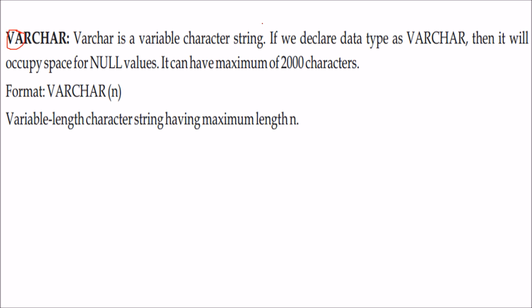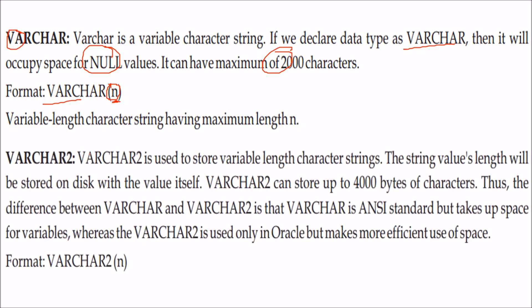Varchar2 is very specific to Oracle. It is used to store variable-length character strings, and the string value's length is stored on disk along with the value itself. Varchar2 can store up to 4000 bytes of characters. The difference between varchar and varchar2: varchar is based on ANSI standard, while varchar2 is Oracle-specific and makes more efficient use of space.